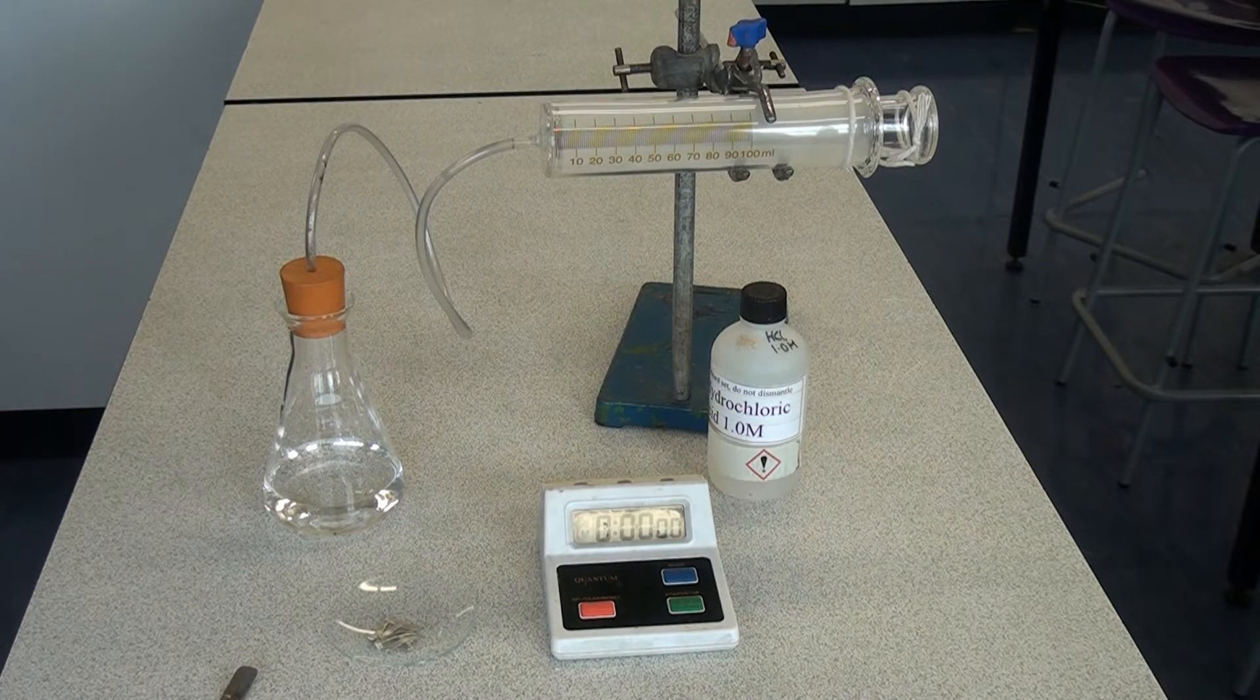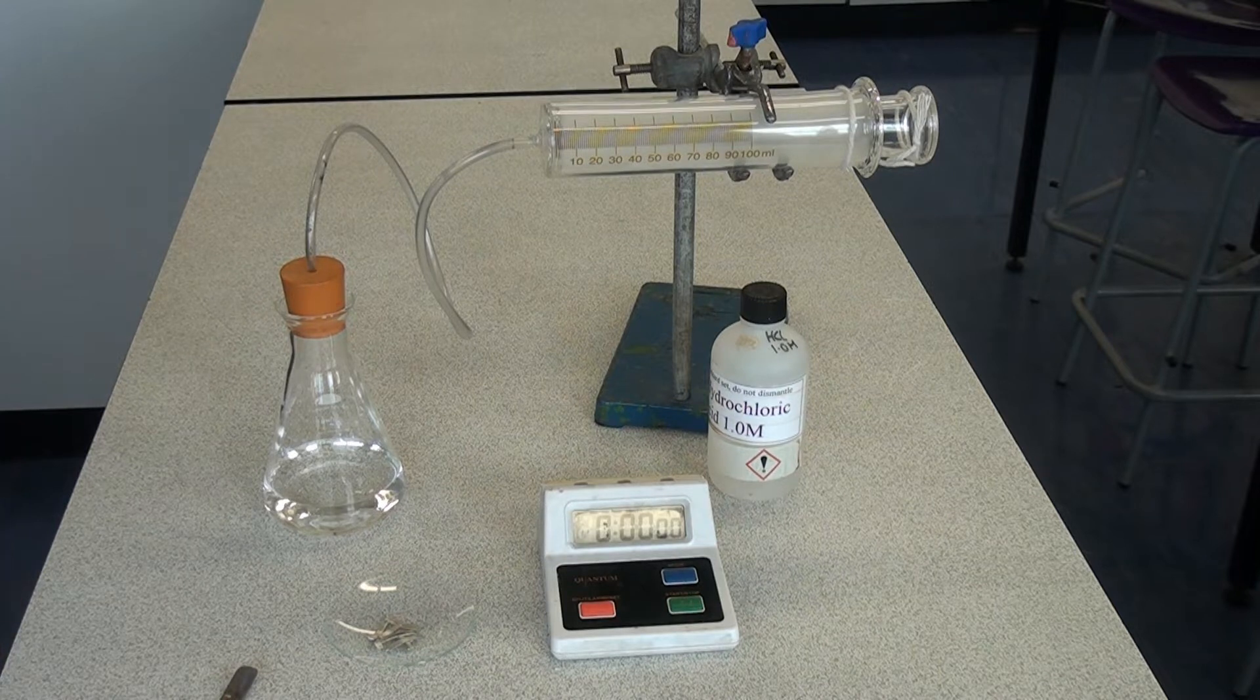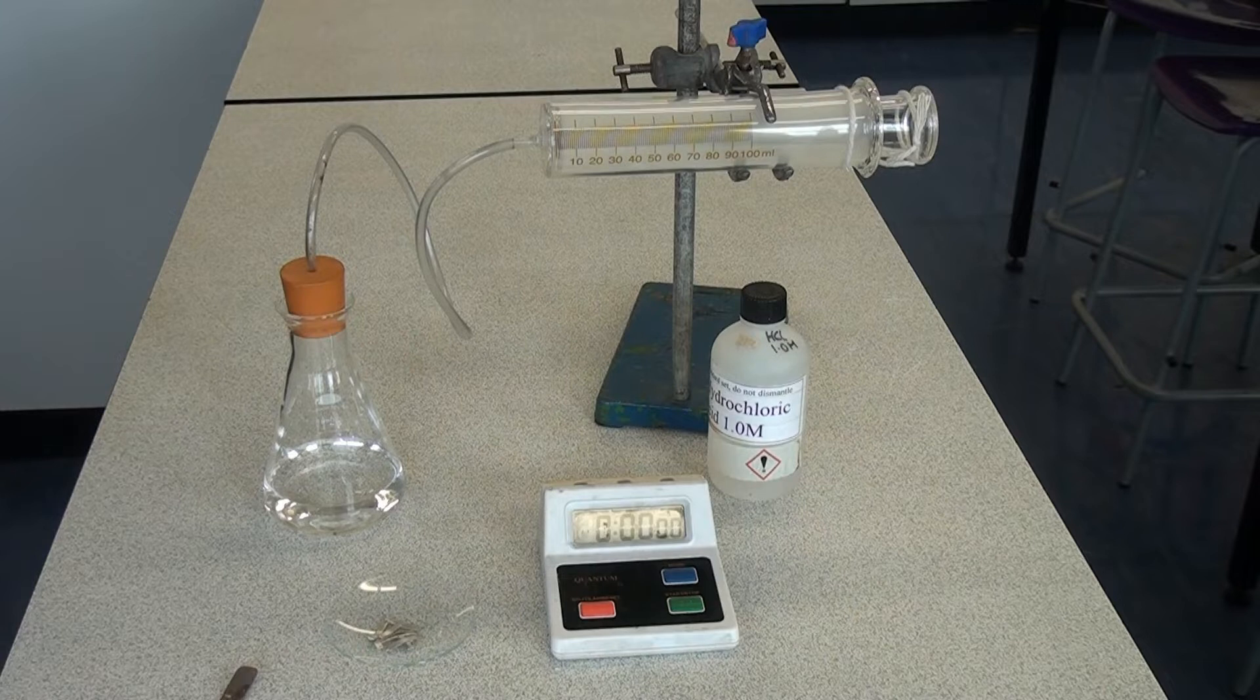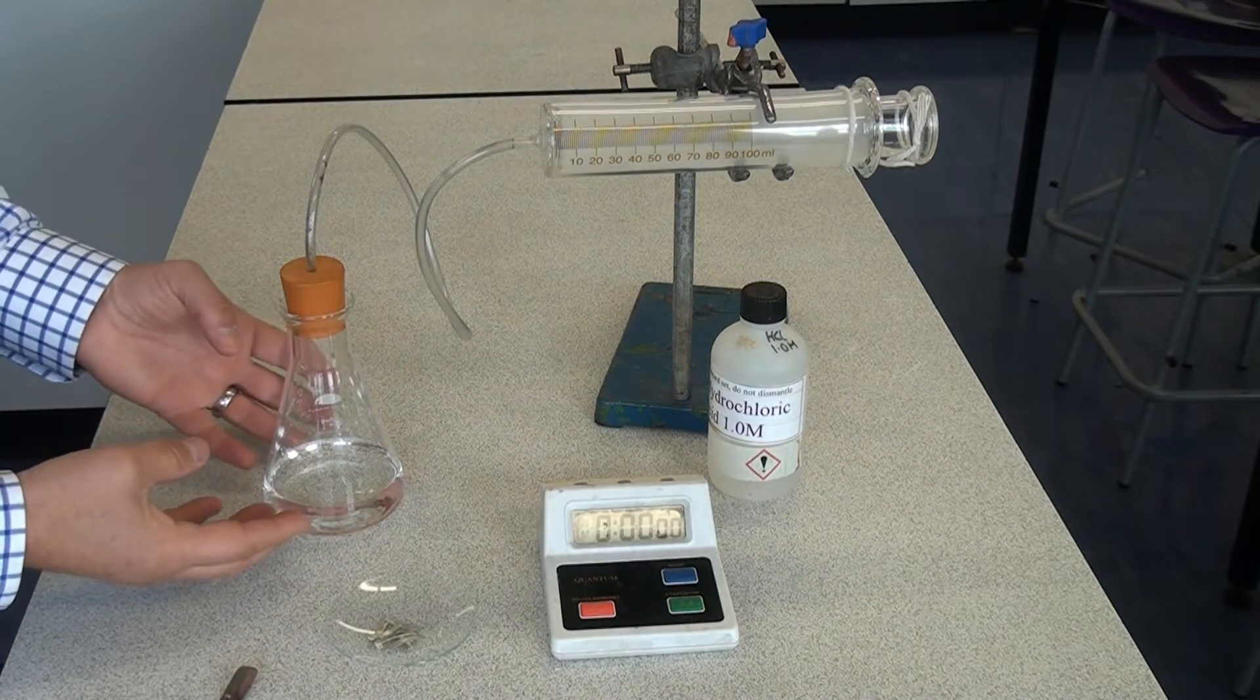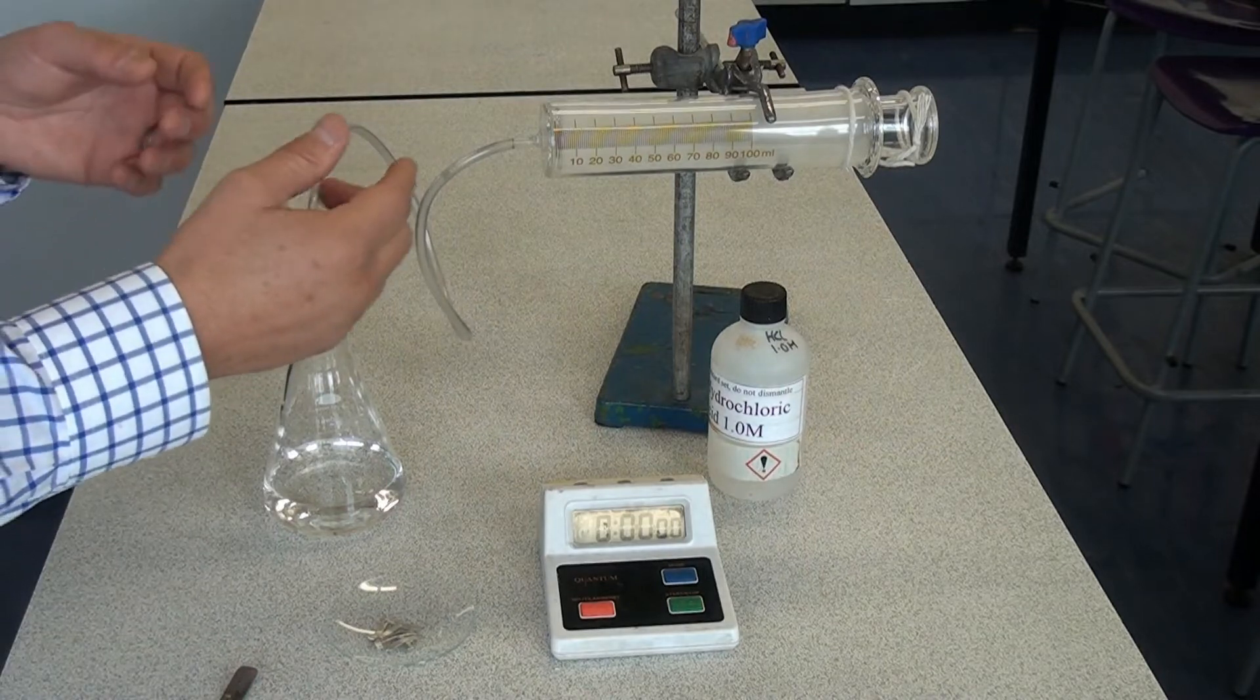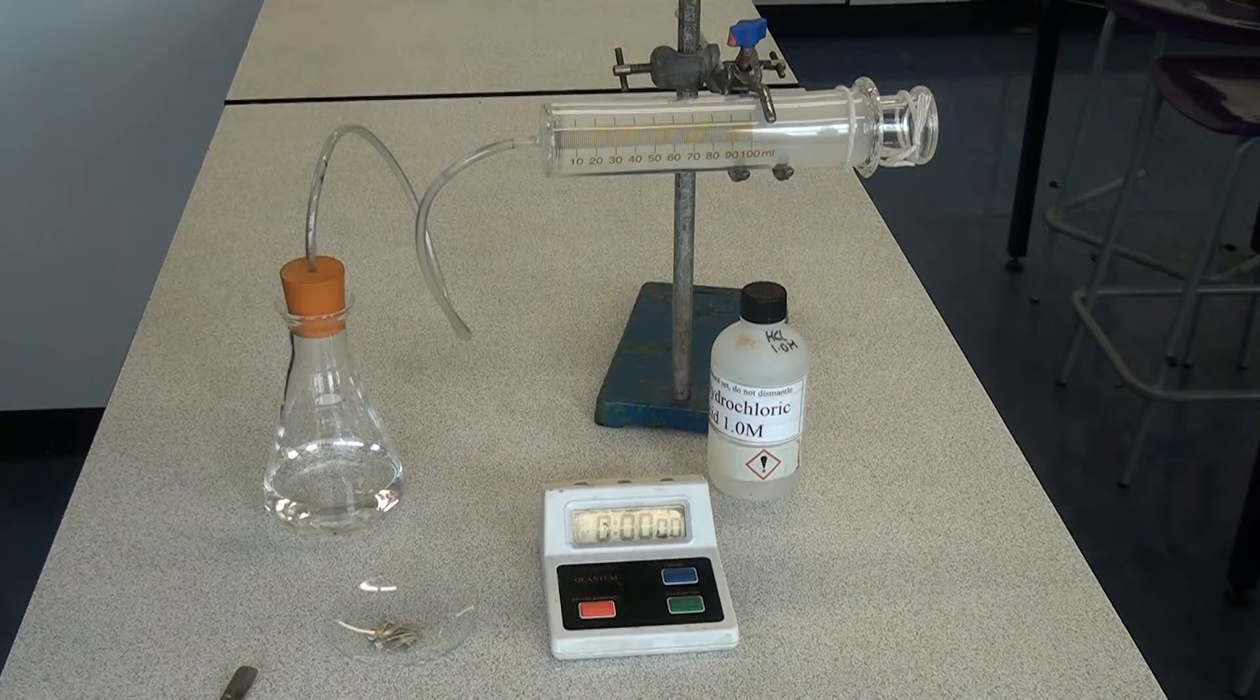So once we know that the chemical reaction is going to produce a gas, there are a number of ways we can collect that gas to measure the rate of reaction. The first method is using a gas syringe, which will be used to collect the gas. As the reaction bubbles, the gas will be made, it will pass along this delivery tube and then we'll see the gas syringe moving out and we can read off the volume of gas made.